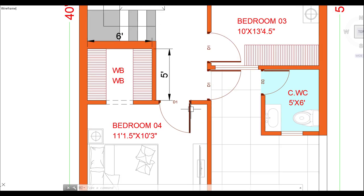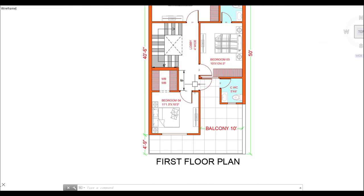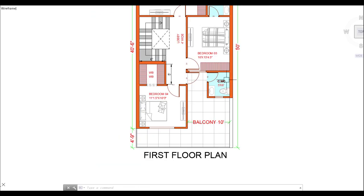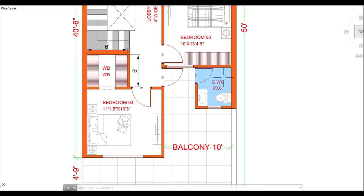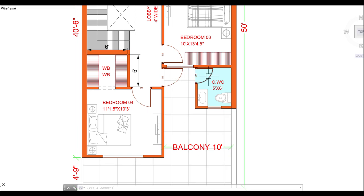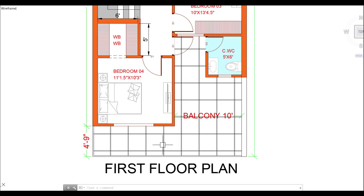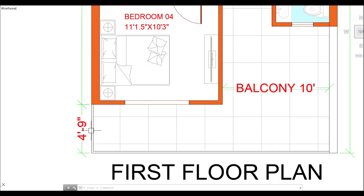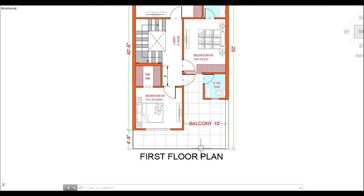Now let's go to the balcony. I have opened the door leading to the balcony. One thing you can also see is that I have given a washroom outside as well. So if you want to sit outside or use a washroom, you can easily use this external washroom. The balcony is visible here on both sides, and I have provided balcony access from multiple rooms.